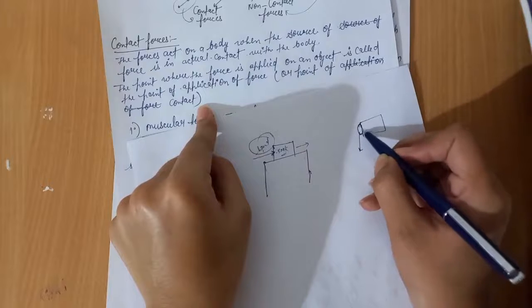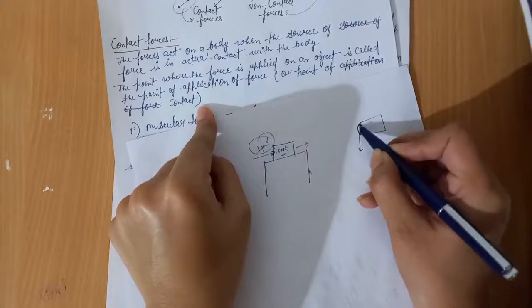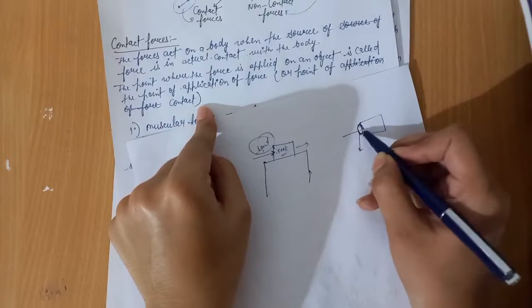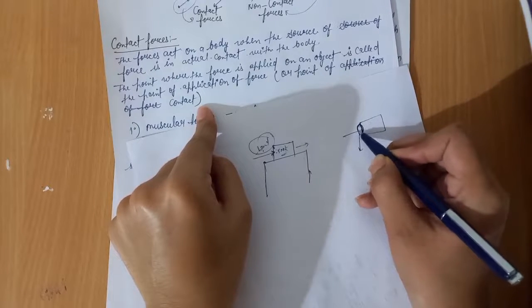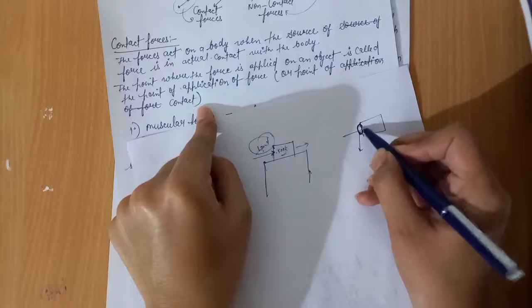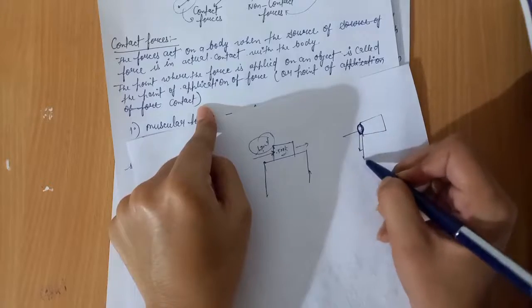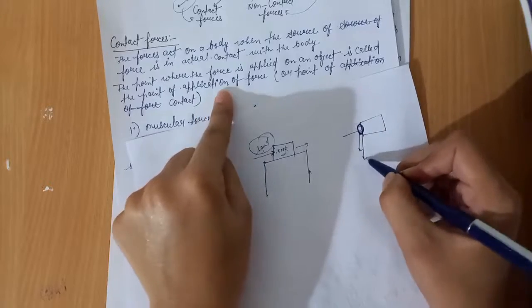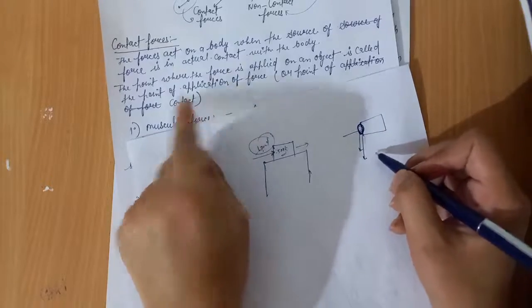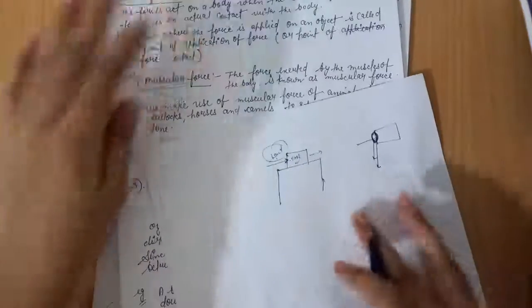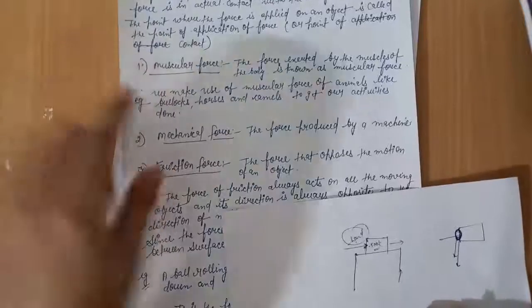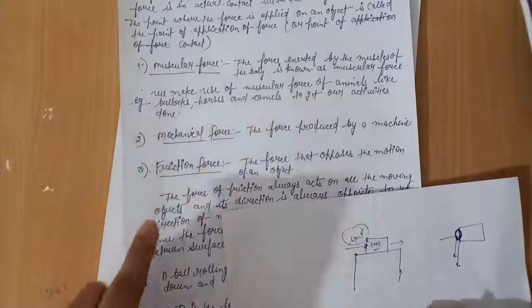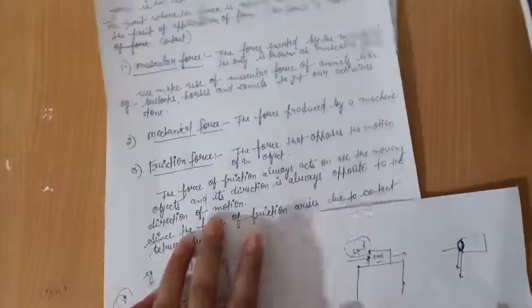If force is exerted by our hand on this surface, this area is called the point of application of force and the point of contact. Contact forces are of three types: muscular force, mechanical force, and friction force.